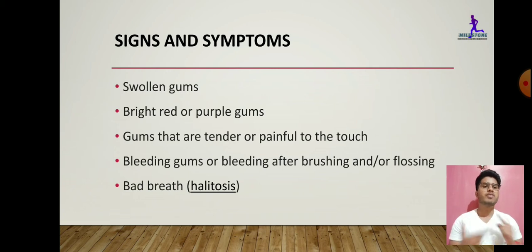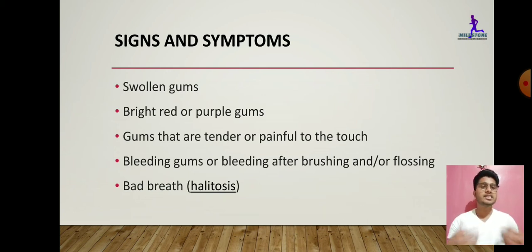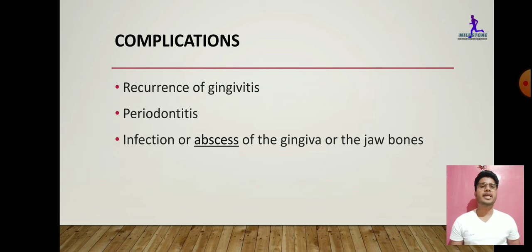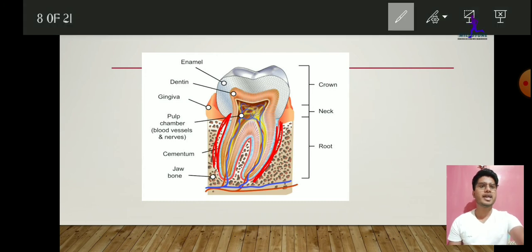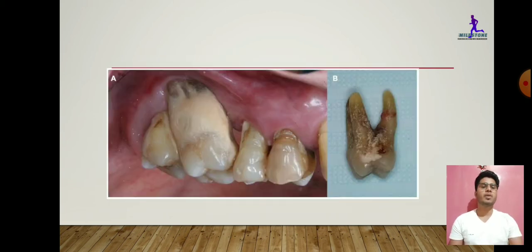Hemorrhage is due to inflammation. When there is inflammation, there is hyperemia — a blood rush — and the gingiva becomes fragile or delicate, which is why there is bleeding while brushing. Complications of gingivitis include recurrence, periodontitis, and abscess formation. The periodontal membrane is the membrane that anchors the tooth into the socket, and inflammation from the gingiva can spread to it, causing periodontitis.